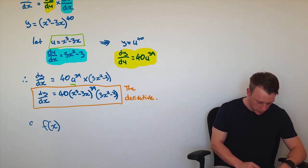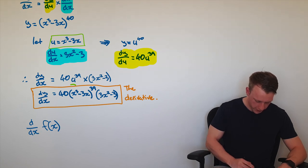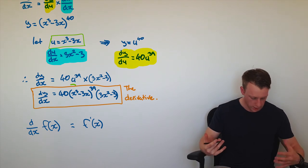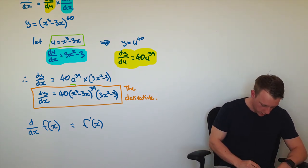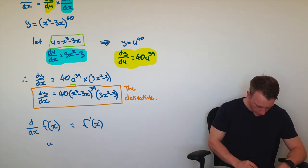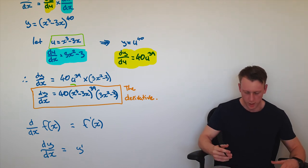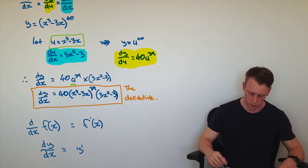Just remember this notation: if we've got a function and we want to differentiate it with respect to x, that is equivalently like saying f prime of x. And if you've got a function y and you want to differentiate dy with respect to x, you can write that as y prime. It's all just notation.